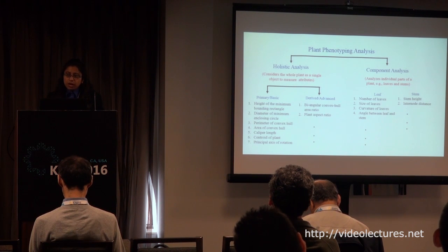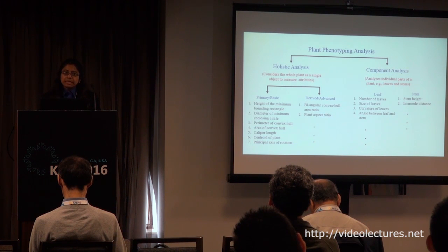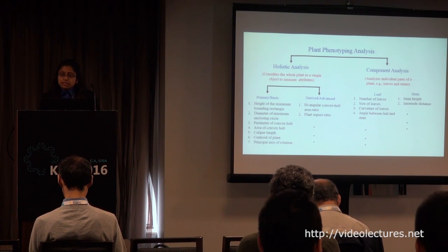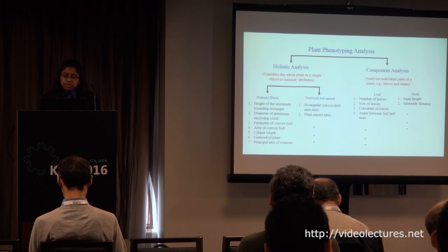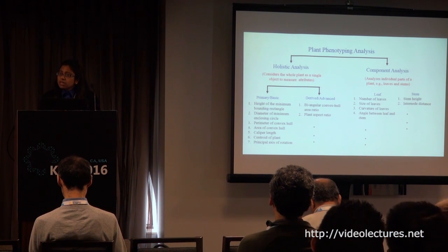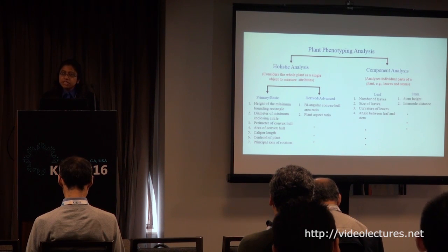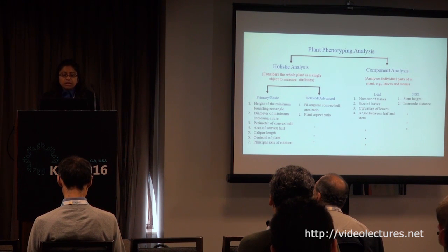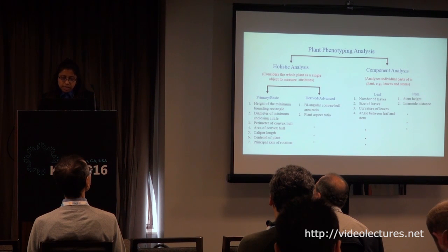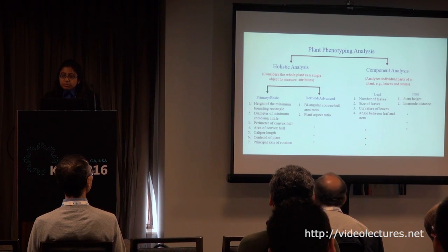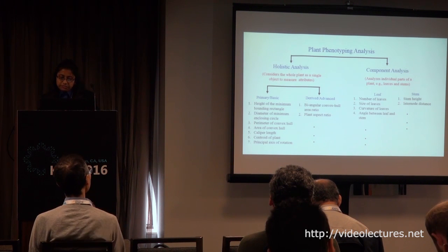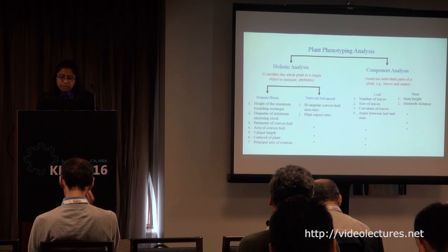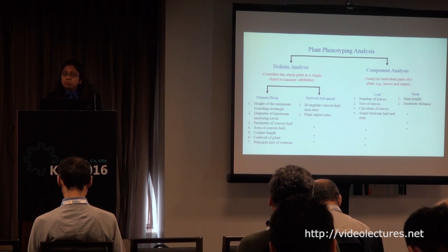Holistic analysis considers the whole plant as a single object and measures its geometrical shape attributes. Component-based analysis considers the individual parts of a plant — stems and leaves — separately to compute phenotypes. Holistic analysis is further classified into two categories: primary or basic, and derived or advanced. Primary holistic analysis computes phenotypes by considering the individual attributes of basic geometric shapes. Derived holistic phenotyping combines two or more primary phenotypes to compute advanced phenotypes. We have found several component and holistic-based phenotyping analyses, and this list is not exhaustive.